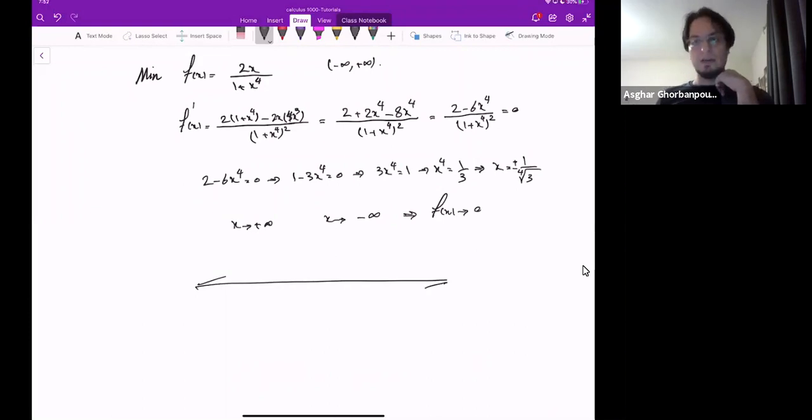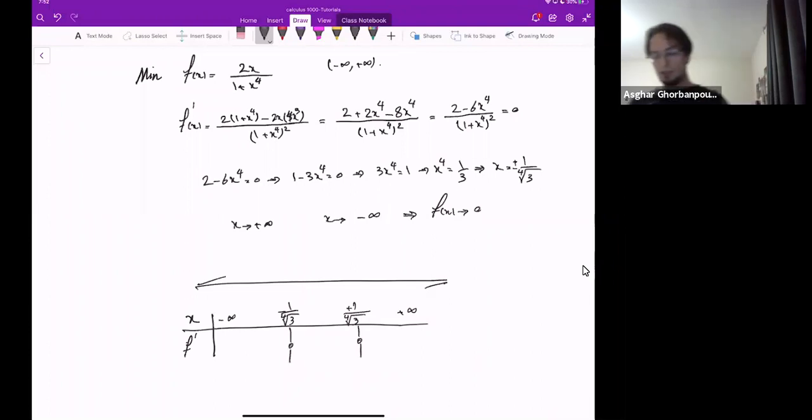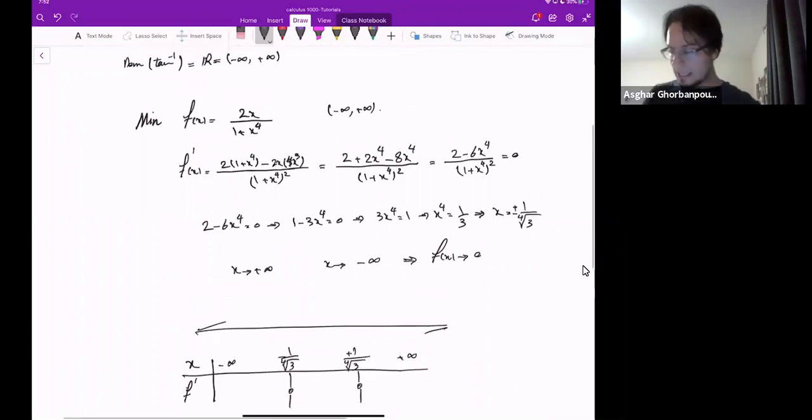But in the middle, you can apply what is called the first derivative test or the increasing/decreasing function. So f prime x, this is negative infinity, negative 1 over the fourth root of 3, then plus 1 over the fourth root of 3, and then plus infinity. We know that at this point, this guy is zero, this guy is zero, and I need to evaluate the f prime. Look at the f prime.